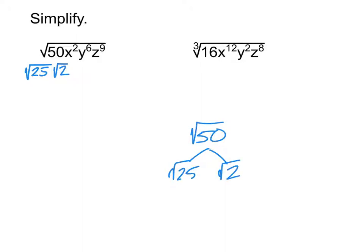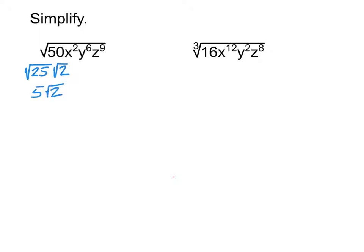Continuing to simplify: root 25 times root 2. The reason we look for the biggest perfect square is so we can actually take the square root of it. The square root of 25 is 5, so that becomes 5 root 2. Notice root 2 stays as root 2 because we can't simplify it anymore. That's as far as root 50 can go.